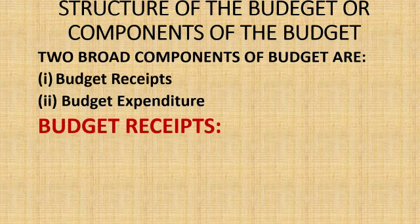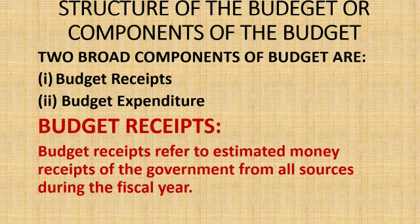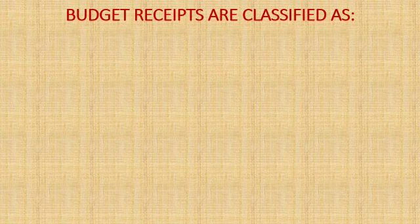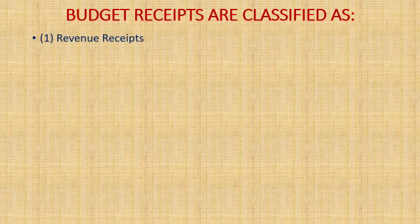What is budget receipts? Budget receipts refers to estimated money receipts of the government from all sources during the fiscal year. This is the government's estimated money receipt — this is not actual. Budget receipts are broadly classified as revenue receipts and capital receipts.